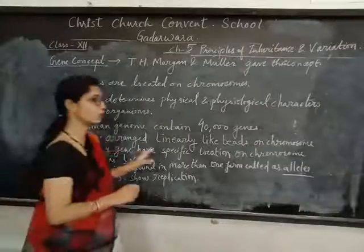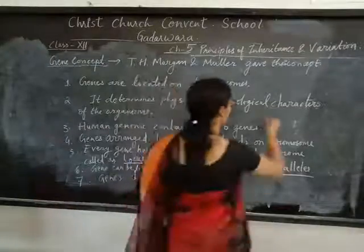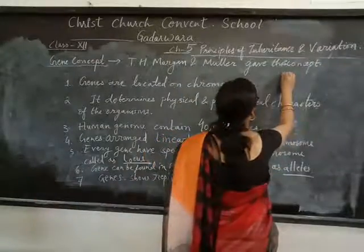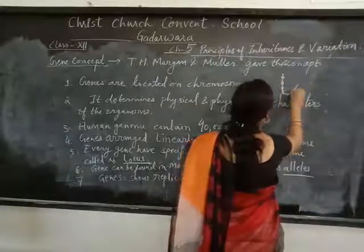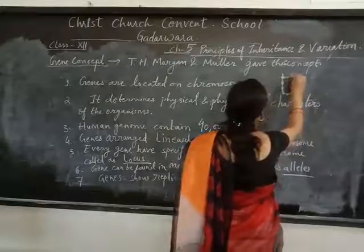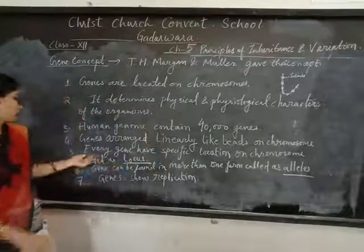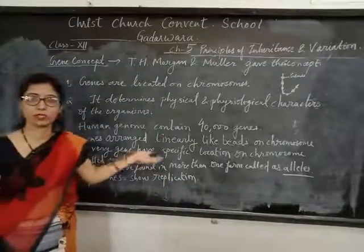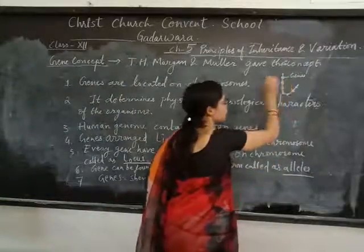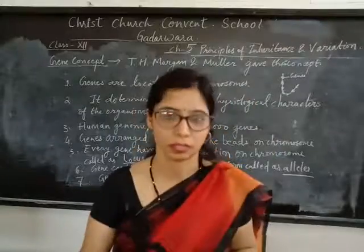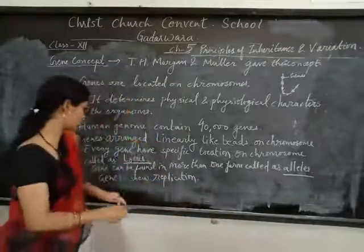Genes are arranged on a chromosome, but how are they arranged? They are arranged in a beaded structure on the chromosome. And every gene has a specific location on the chromosome, and that is called the locus - that point where the gene is located is called the locus.